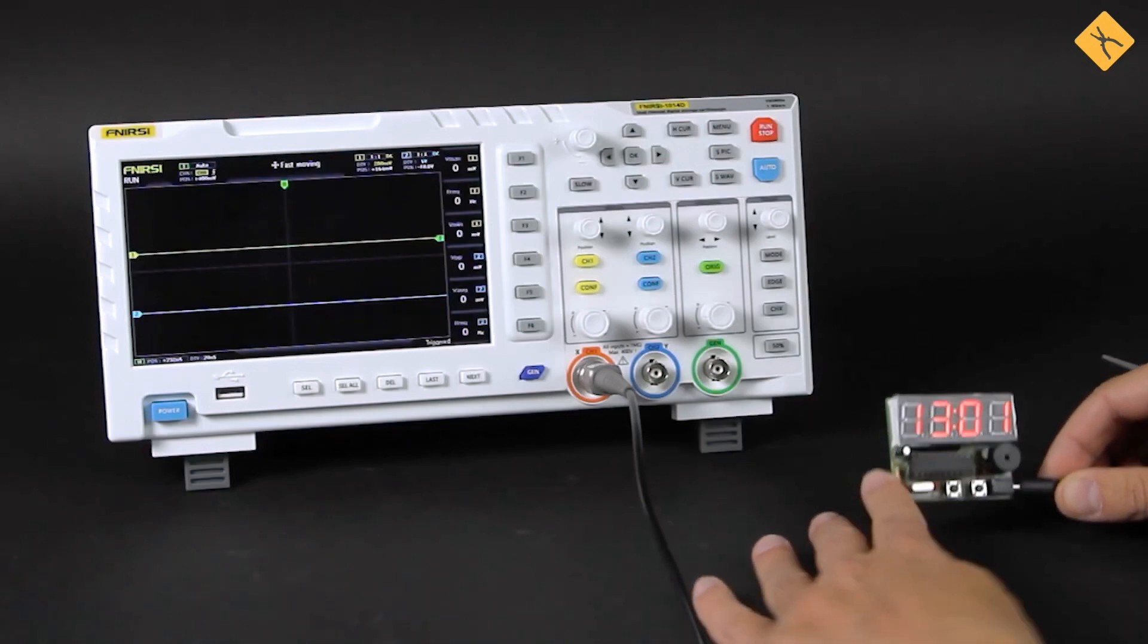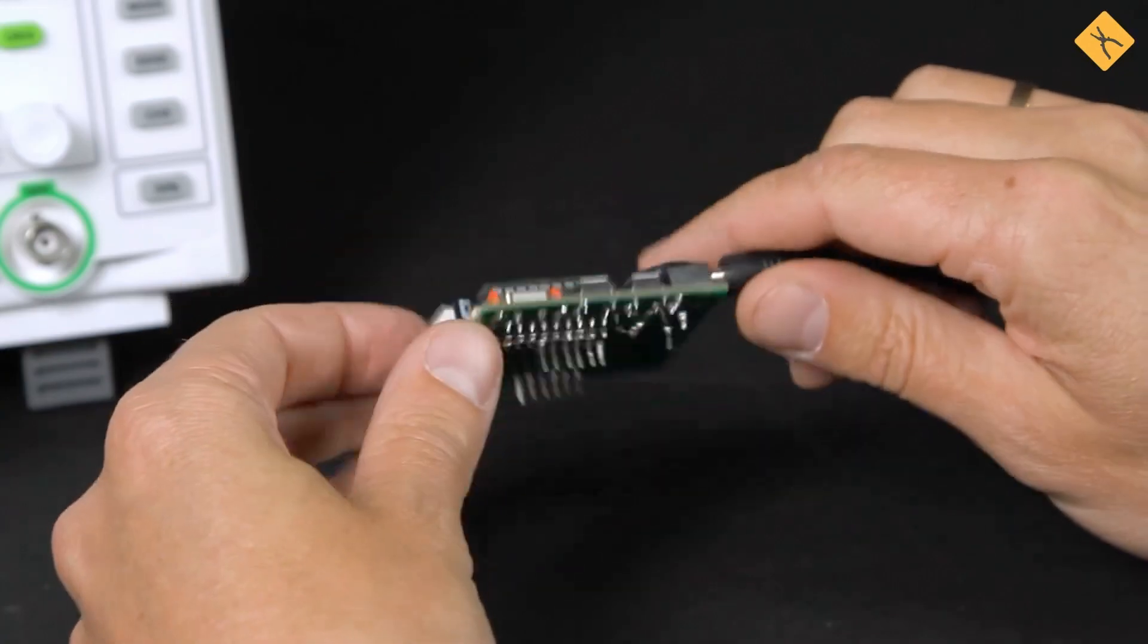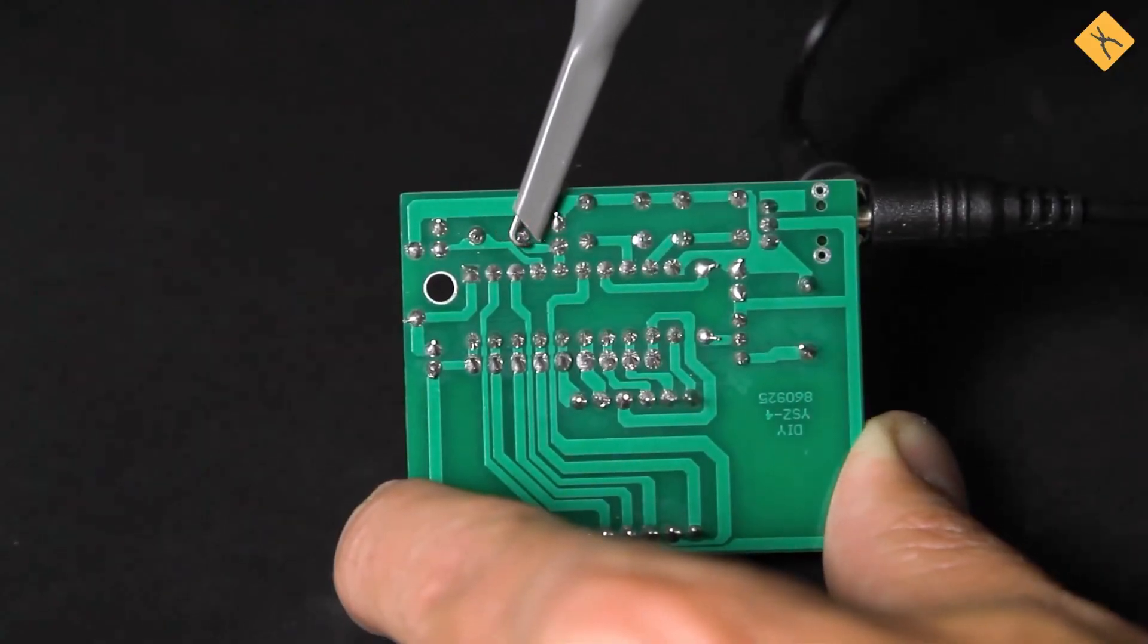Let's do some testing. This electronic clock board has a 12 MHz quartz crystal oscillator. We'll record the signal at the oscillator outputs.